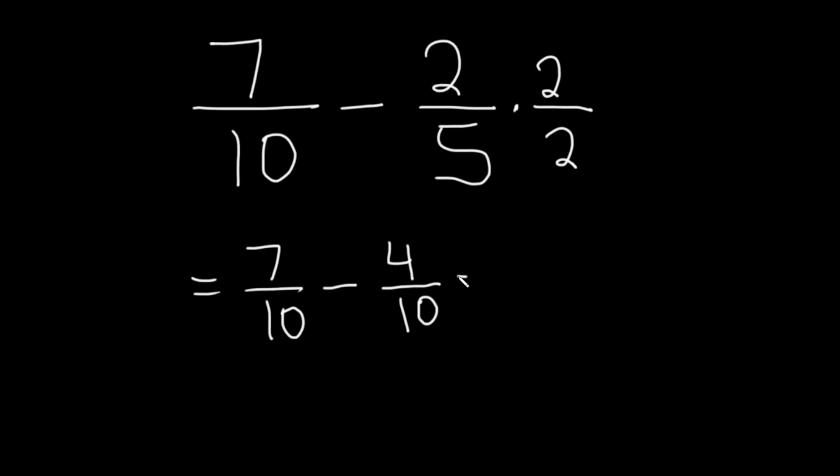And now you have that common denominator, right? So you can subtract, 7 minus 4 is 3. Subtract straight across once you get to that point. So 3 tenths, or in decimal form, 0.3.